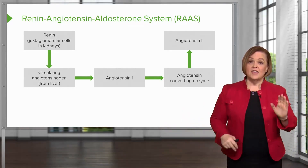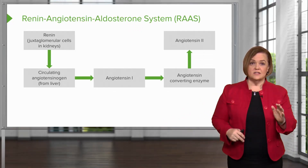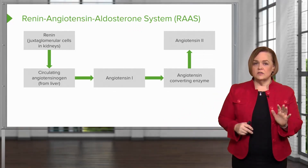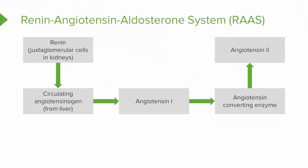The RAAS is one of the five key players that the body uses to maintain blood pressure. The renin — can you remember the reason renin appears? Why does the body put that out? Why do those J cells in the kidney put out renin? Renin connects with angiotensinogen, then you end up with angiotensin 1. Angiotensin 1 hits ACE, angiotensin converting enzyme.